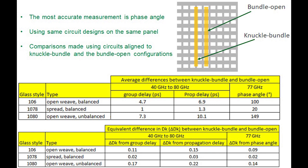The data shown here is a table comparing circuits built on three different laminates — 106, 1078, and 1080 glass — contrasting the knuckle bundle orientation versus the bundle open configuration on the same panel. We compared differences in group delay, propagation delay, and phase angle. I personally find phase angle the most accurate measure. For circuits built on 106 glass, the phase angle difference at 77 GHz is 100 degrees between the conductor over the knuckle bundle run versus the conductor over the bundle open run — a significant difference that is a very big concern for automotive radar.